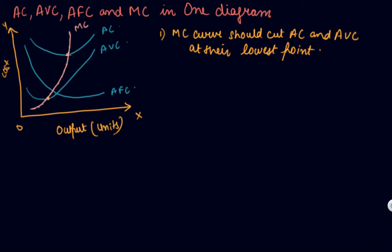The lowest point of AC is here, so MC is cutting AC at its lowest point. This is the main thing you have to take care of in this diagram: MC should cut AC and AVC at their lowest points.